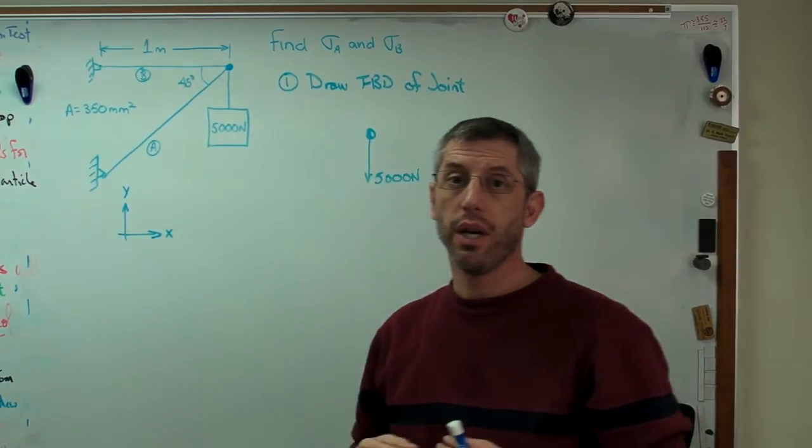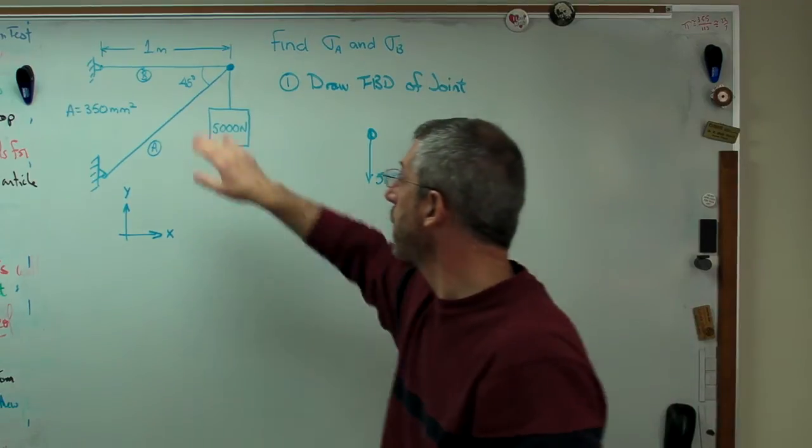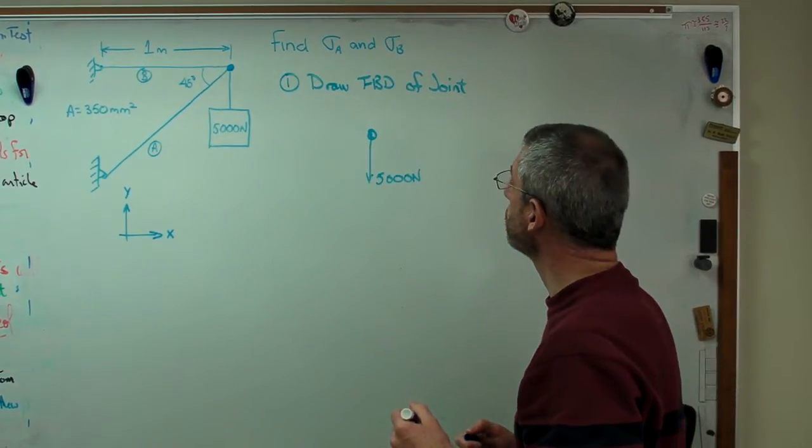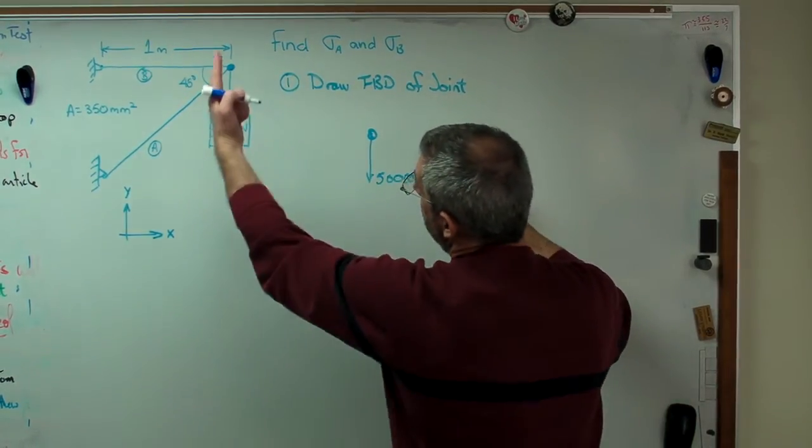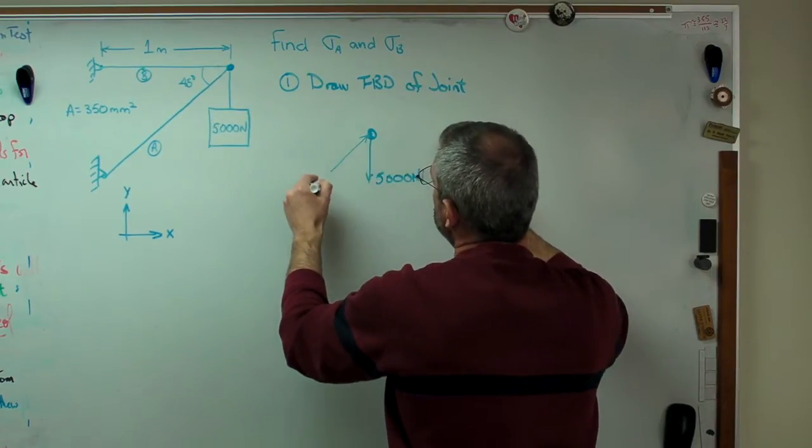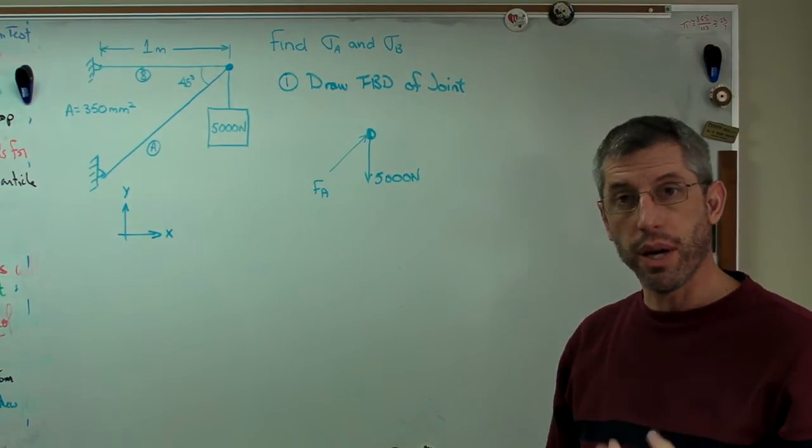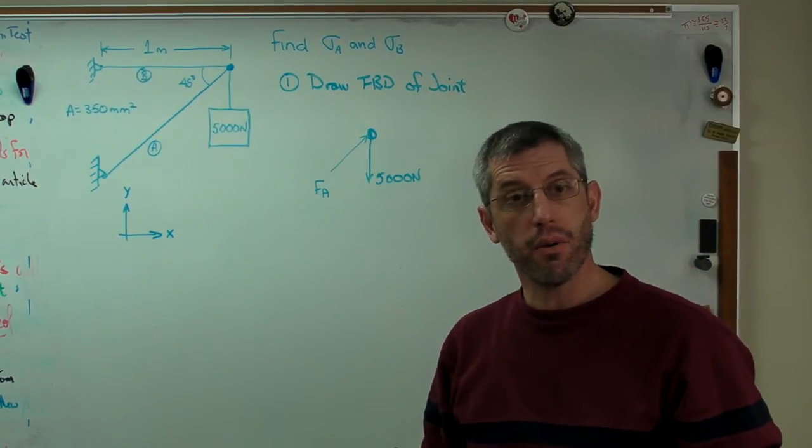This is horizontal, so it can't make any vertical component. These are pinned on both ends, so they can only make forces along the axis of the beam. These are sometimes called two-force members or two-force elements. So the vertical component of A has to be that direction. So that means the force in A must be like that.